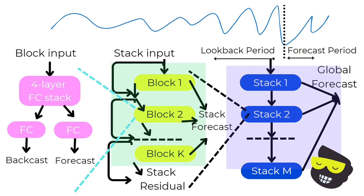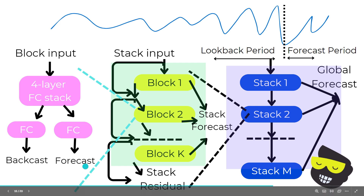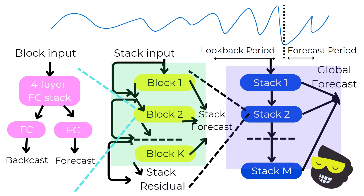The fully connected layers within each block are designed to handle data transformations and feature extraction. After the data passes through the fully connected layers, it splits into two paths: one for the backcast and another for the forecast. The backcast output aims to approximate the input data, helping to refine the residuals that are passed to the next block. The forecast output provides the predicted values for the forecast period.